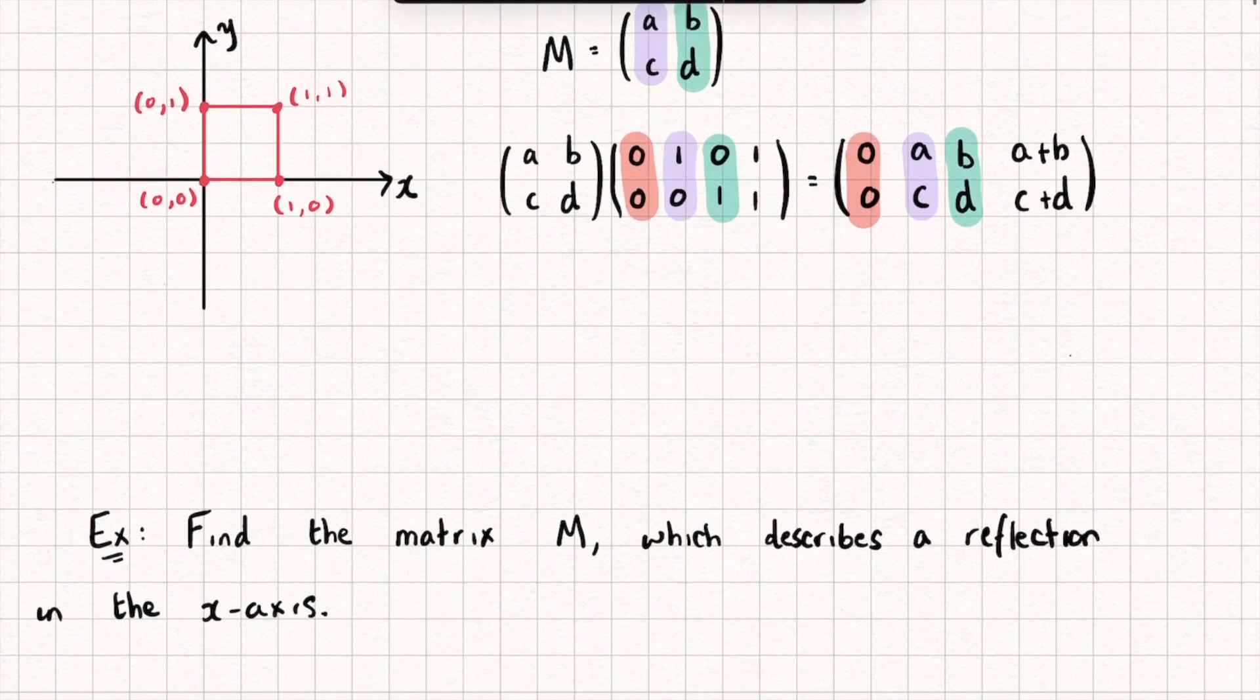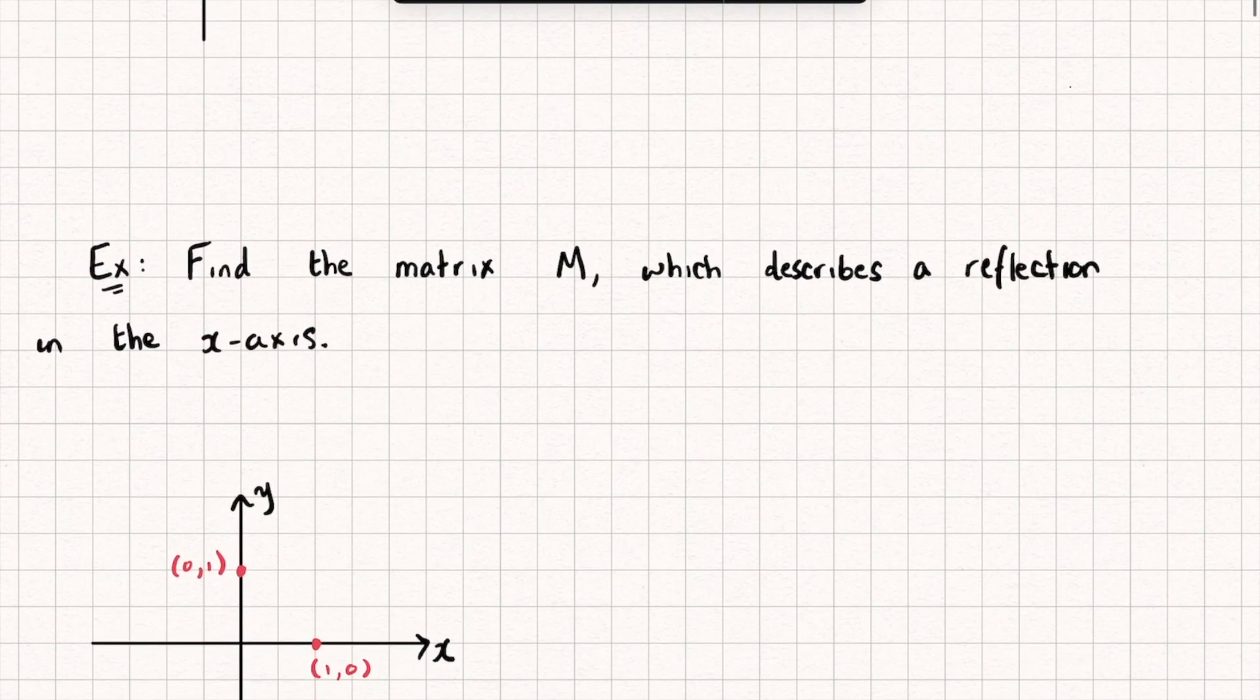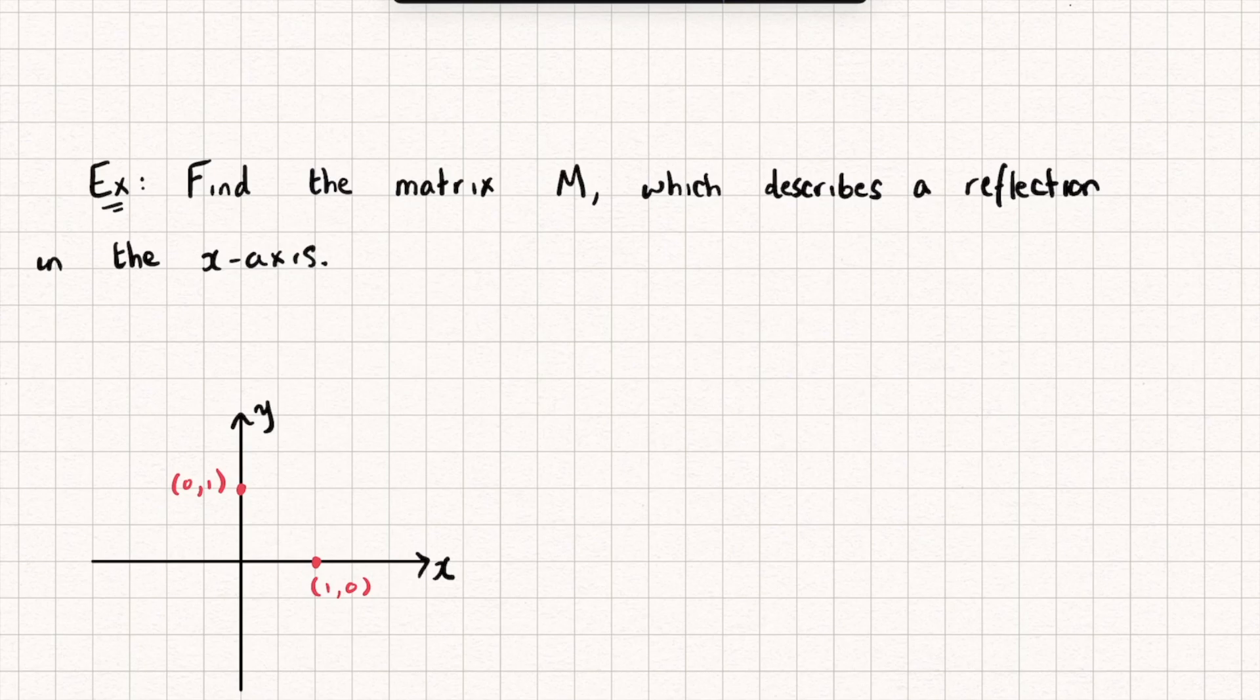So let's look at an example here. So we're asked to find the matrix M which describes a reflection in the x-axis. Okay, so let's think, under the transformation which is a reflection in the x-axis, so a reflection in this axis here.